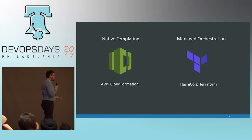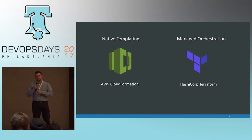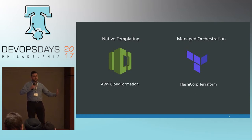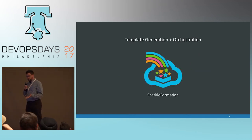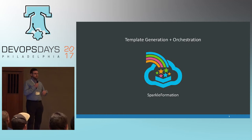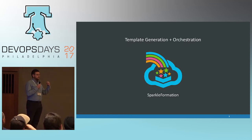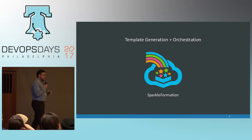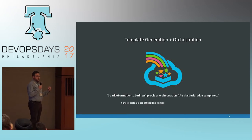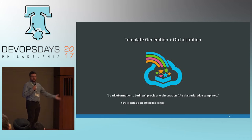We're familiar with a lot of infrastructure as code tools. For example, the native templating at Amazon is AWS CloudFormation. Many of us are also familiar with Terraform for a fully managed solution. But there's a set of tools in the middle — one example being SparkleFormation. It works with the native APIs and native formats of something like Amazon.